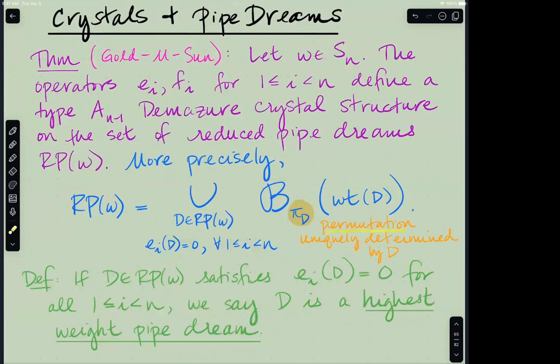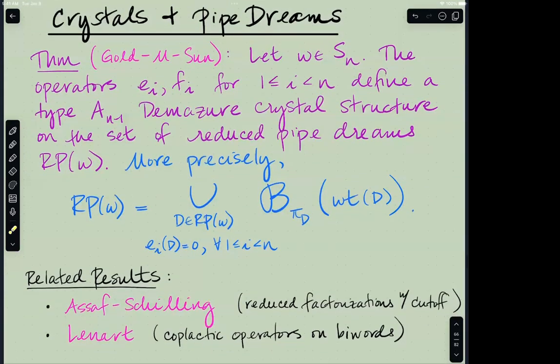Regarding this condition indexing the Demazure crystals: if E_i acts as zero for all i, common language in representation theory, we call such a D a highest weight pipe dream. You cannot raise it anymore, so its weight is as high as possible. We have these highest weight pipe dreams which want to index the components of a collection of reduced pipe dreams. If you have a highest weight pipe dream, this weight vector will actually be an honest partition. So we're in the scenario of the special cases we looked at before, where you start with a partition as your input to build the crystal. All you need to know is figure out this permutation in order to truncate the operators according to that Demazure permutation. This permutation is uniquely determined by that highest weight pipe dream. We have an algorithm for picking this out.